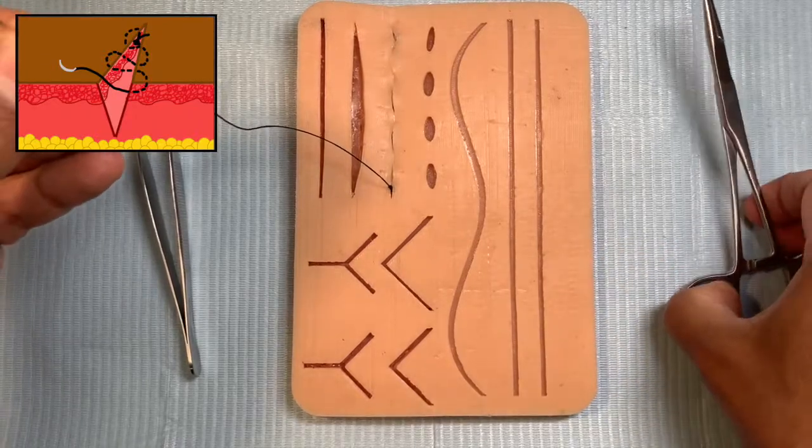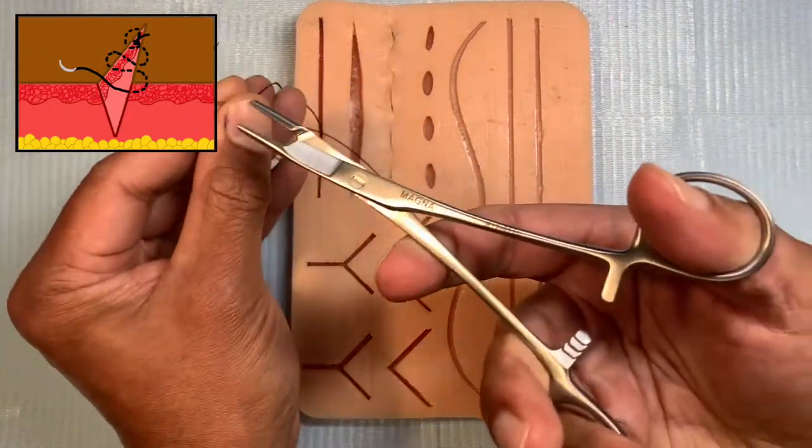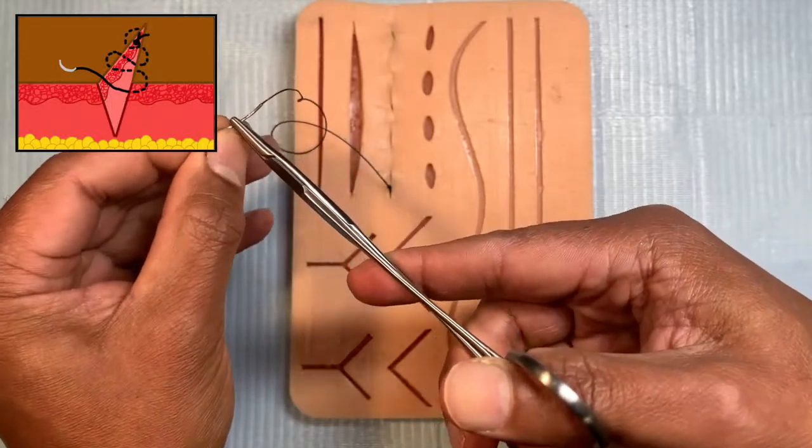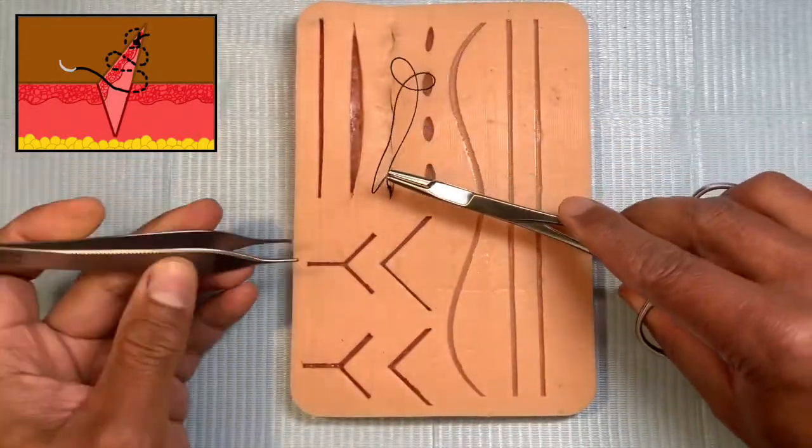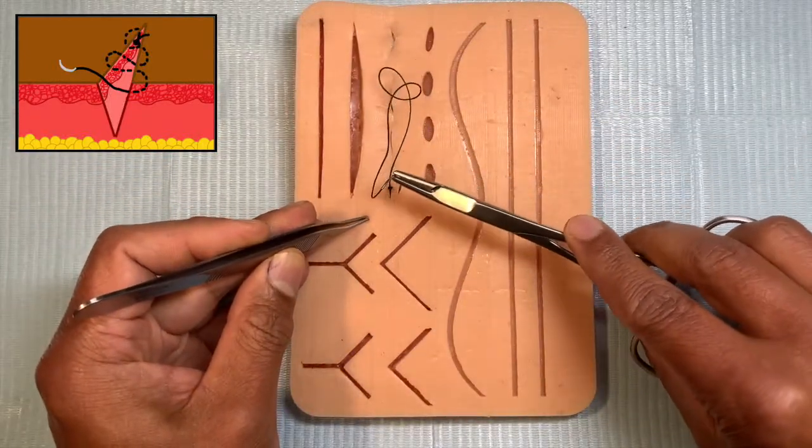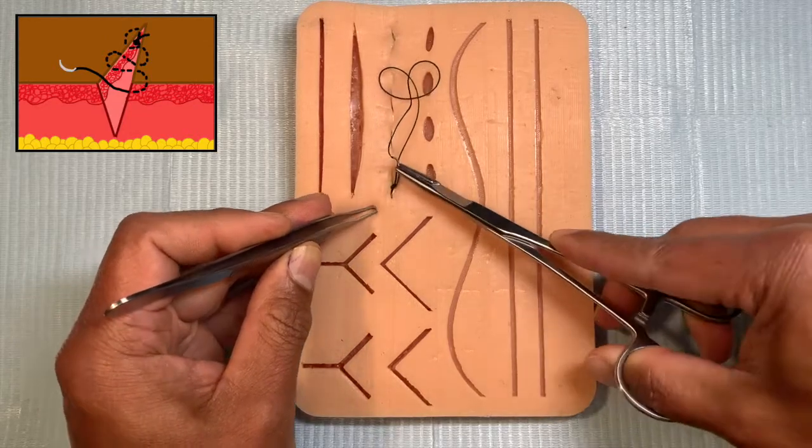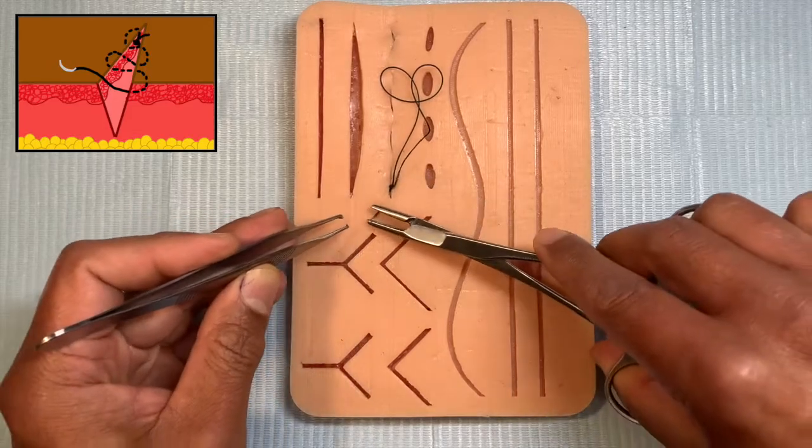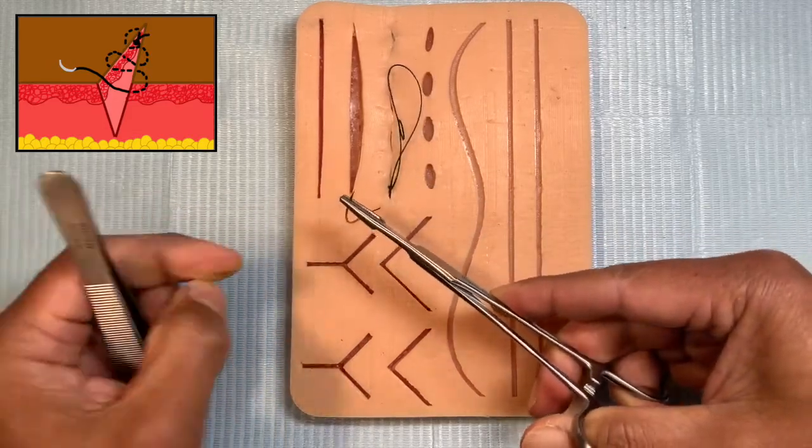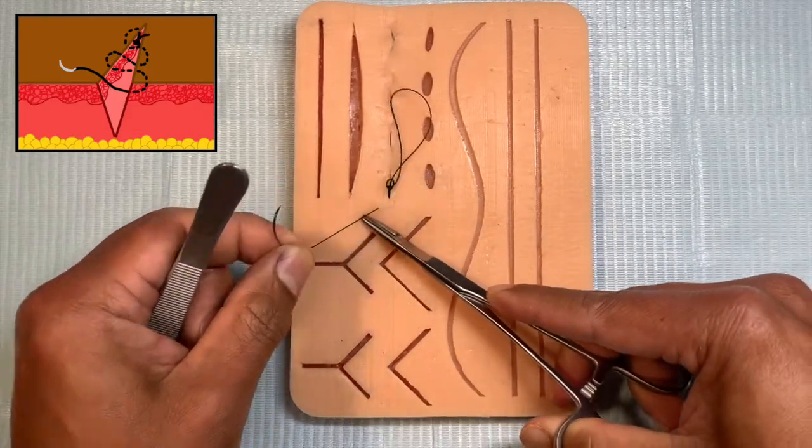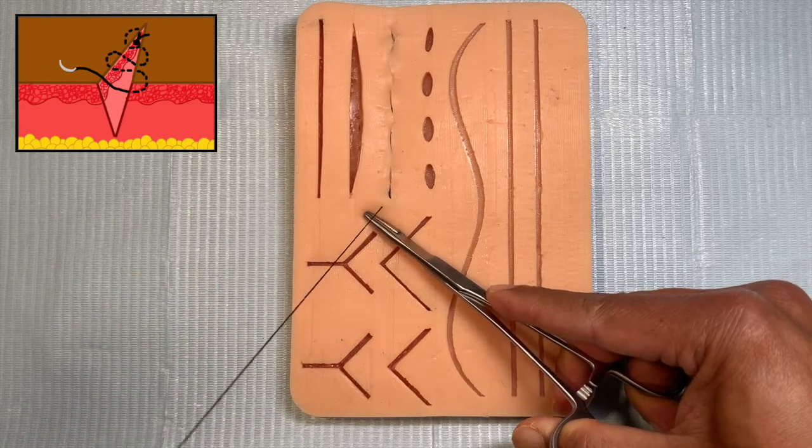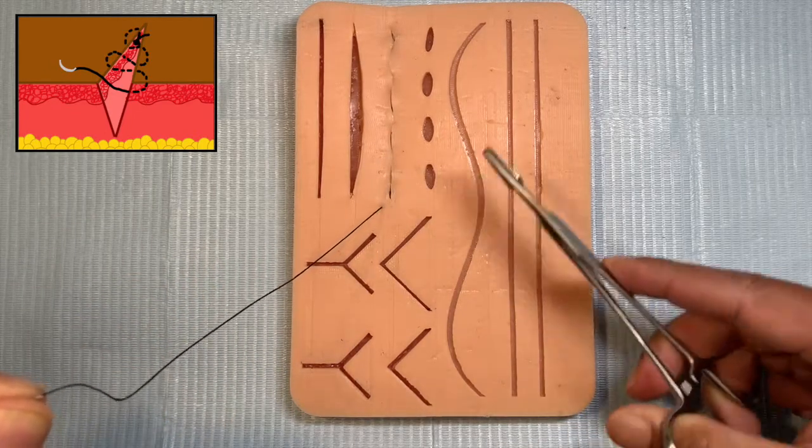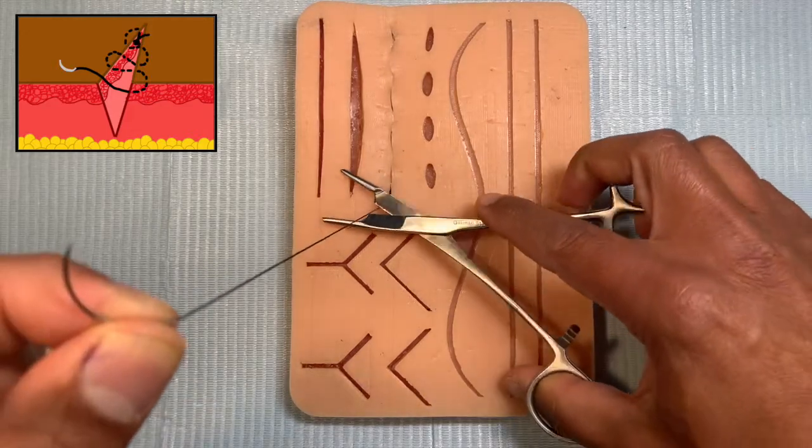Now I'm going to take my needle driver because it's slightly bulky with a total of five throws on it. I'm going to pass it through the edge of the wound in depth so I'm burying this bulky knot inside to maintain the suture without it sticking into the skin. Now the knot is completely buried.